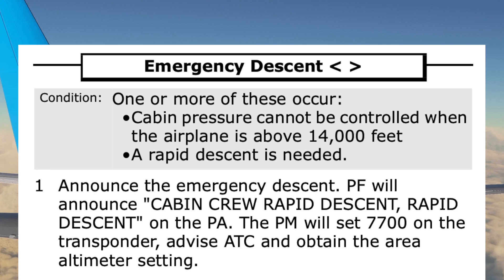An emergency is declared to ATC and the transponder is set to 7,700. The local altimeter setting is obtained.